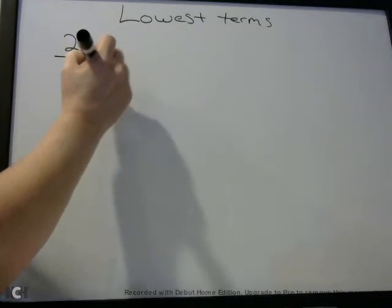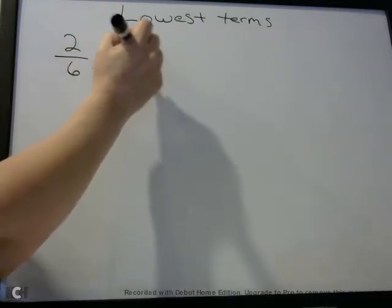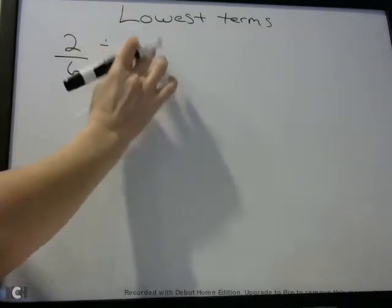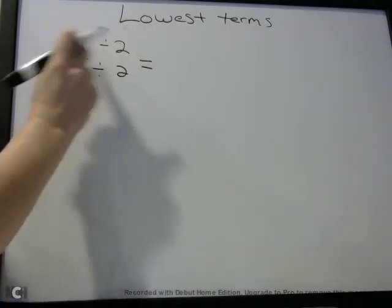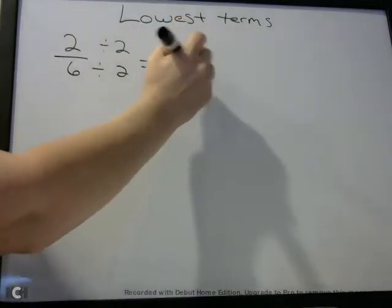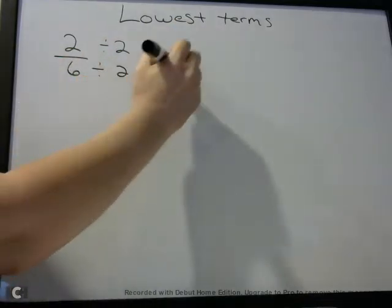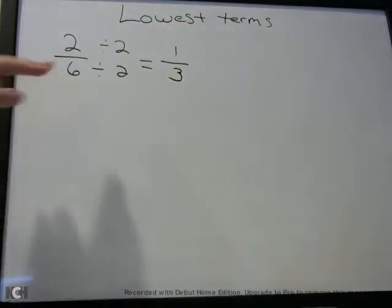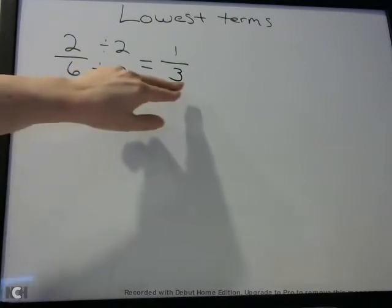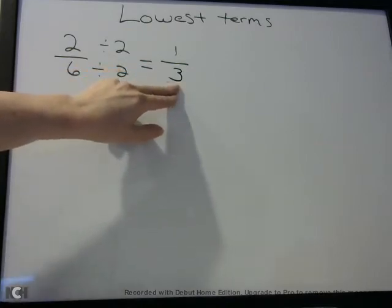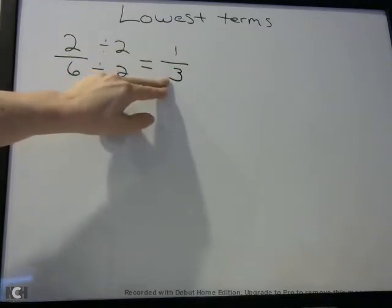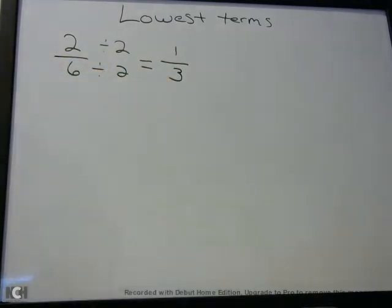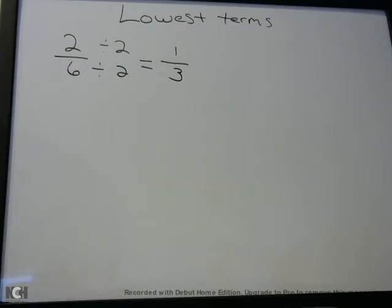So if we divide the numerator by 2 and divide the denominator by 2, we get: 2 divided by 2 is 1, and 6 divided by 2 is 3. So 2/6 in lowest terms is 1/3, because now 1 and 3 cannot be divided by the same number evenly — aside from 1, and 1 doesn't count.